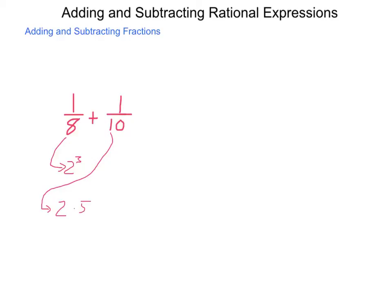My lowest common multiple includes all pieces that are in there. Expanding out my 2 cubed, that's 2 times 2 times 2. So, what is the minimum requirement needed to make a common denominator? Well, I have to have a 5 — that takes care of the 10 — and I have to have three 2s. By doing that, I automatically took care of the 2 from 10, so my lowest common multiple is 2 times 2 times 2 times 5, which equals 40.